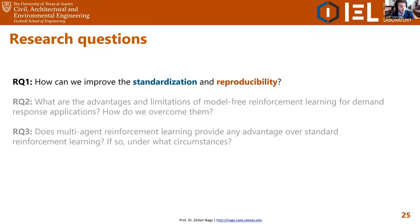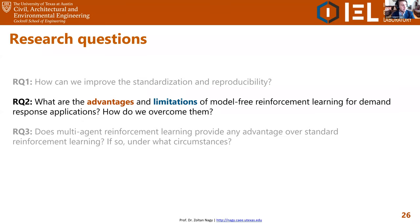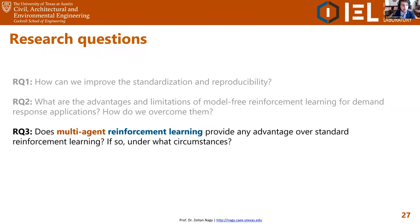We formulated three different research questions. The first was how we can standardize and make this field of research more reproducible. The second was what are the main advantages and limitations of model-free reinforcement learning for demand response and how we can overcome those limitations. The third was whether multi-agent reinforcement learning has any advantage over standard reinforcement learning and, if so, under what circumstances we can take advantage of multi-agent RL rather than having buildings act independently.